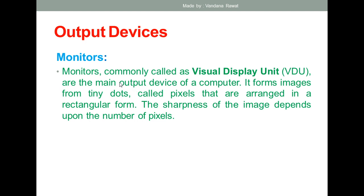Monitors are commonly called Visual Display Units and are the main output device. The monitor is one of the most important and common output devices — without it we cannot use a computer meaningfully. If the computer processes data but it is not displayed on screen, then that information is of no use. So monitors are very important in the field of computing.